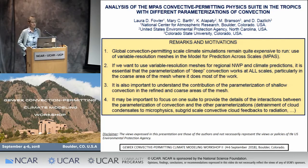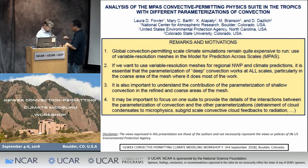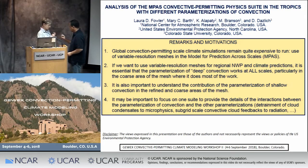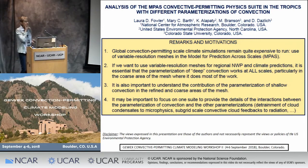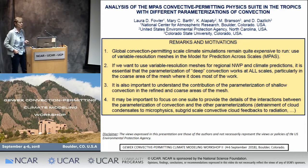To do so, I'm going to use the variable resolution mesh, which we haven't quite talked about a lot today. Global convective permitting scale simulations remain quite expensive. So if we want to understand interactions between convection parameterizations, resolved convection, cloud macro physics, and radiation, then using a variable resolution mesh in MPAS is probably one of the tools that we can use.